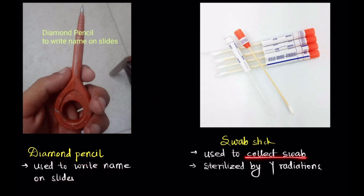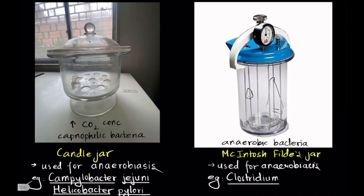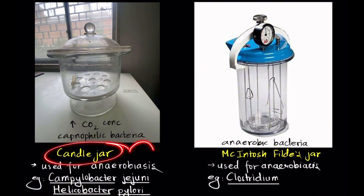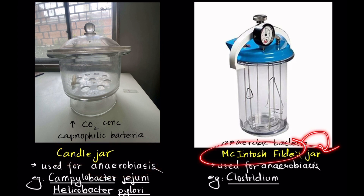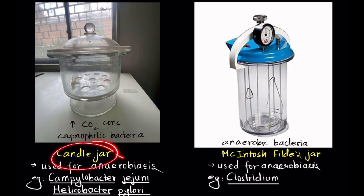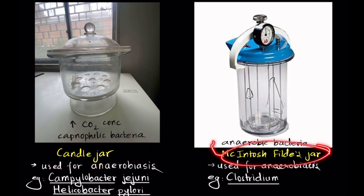Cotton swab is used to collect swabs and it is sterilized by gamma radiations. Both candle jar and McIntosh filter jar are used to maintain anaerobic conditions. Candle jar is used to grow capnophilic bacteria, and McIntosh filter jar is used to grow anaerobic bacteria.